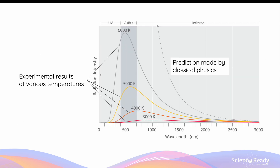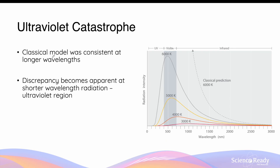The prediction of the classical model was not supported by experimental data. Experiments consistently showed that instead of increasing indefinitely, the intensity of radiation actually reaches a maximum value and decreases as wavelength becomes shorter — producing a bell-shaped curve. Experiments also showed that as temperature increases, the peak of the bell curve shifts left and the area under each curve increases. While the classical model agreed with experimental values at longer wavelengths, the discrepancy became increasingly evident at shorter wavelengths, specifically near the ultraviolet region. This was termed the ultraviolet catastrophe.